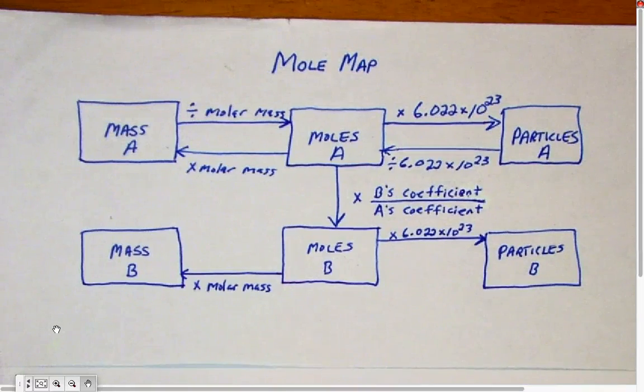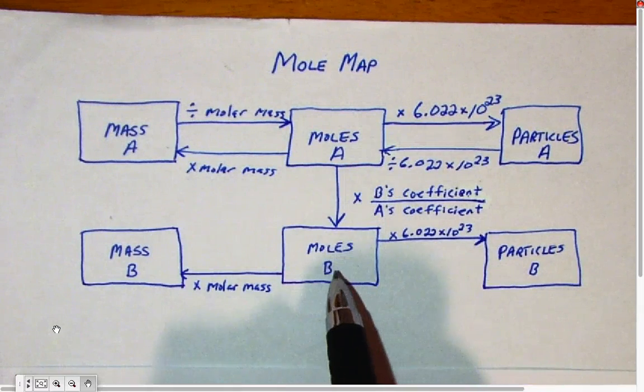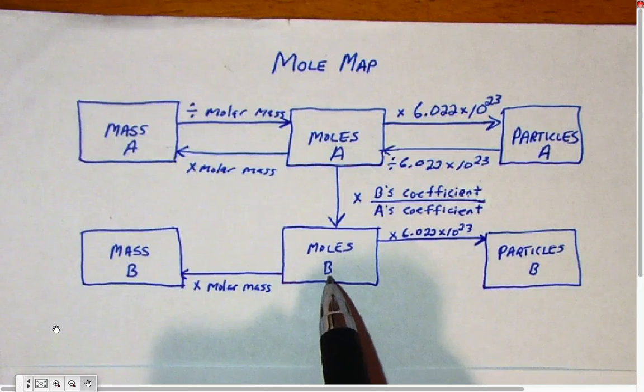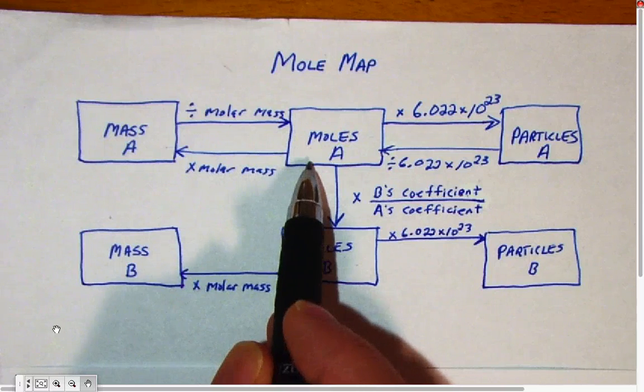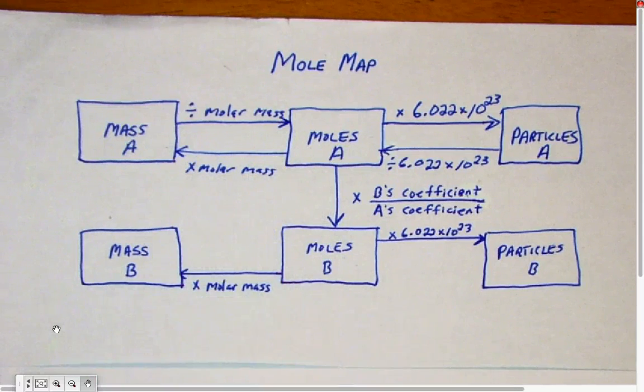Once you're down here in the mole map at moles of this new chemical B, you can turn that into mass by going this way. You multiply by molar mass. Notice that's the same as up above here, going from moles to mass, you multiply by the molar mass.